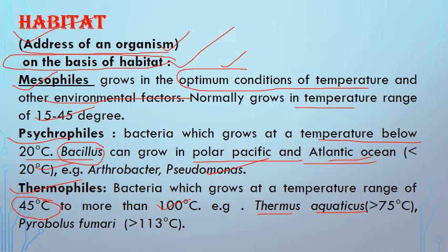Thermus aquaticus was used to isolate the enzyme Taq polymerase, which is the most important enzyme used in PCR — Polymerase Chain Reaction. It can work well at high temperatures. This bacteria grows at temperatures greater than 75 degrees Celsius, allowing it to tolerate extreme environmental conditions. In addition, Pyrobolus fumarii can tolerate temperatures greater than 113 degrees Celsius.